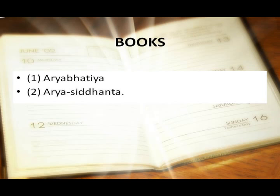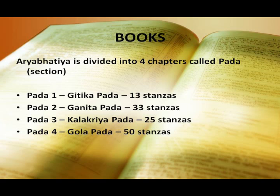Pada means section. Pada 1: The name of Pada 1 is Kitika Pada. It consists of 13 stanzas covering basic definitions of important astronomical parameters and tables.